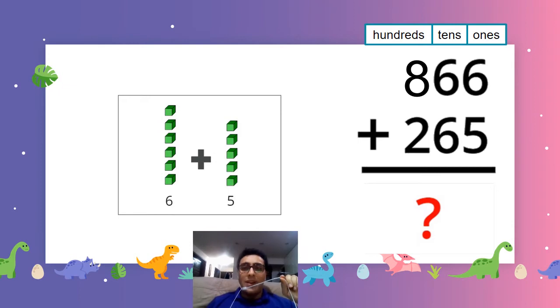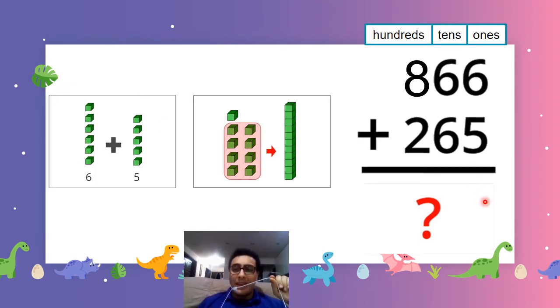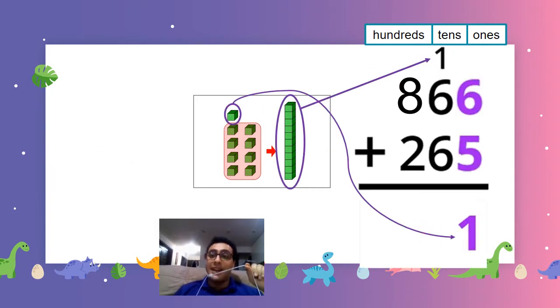Now, we cannot just say, oh, we have to write 11 here. No, no, no. We regroup. What is regroup? We regroup 10 ones as 1 ten, and we put it up here. And we keep this one, we put it down there, like this. This is called regroup. 10 ones into 1 ten. We bring it in the tens column, and we keep the one down here, because it's 11.